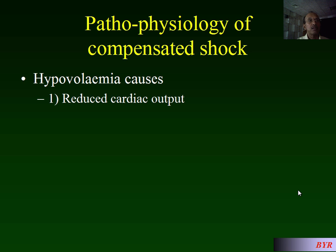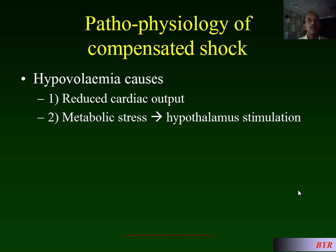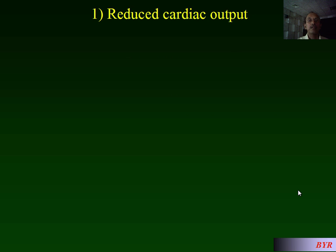Hypovolemia causes reduced cardiac output due to decreased venous return. In addition, the factors causing hypovolemia — either disease or trauma — cause metabolic stress, which leads to hypothalamic stimulation. These two factors in turn cause a cycle of events leading to compensated shock.